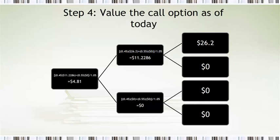Now when we bring it back one more time, one more year, we again weighted by the probability of up, probability of down, and we discounted by 1.05, or 5%. So we have a value of the call option of 4.81. So that's the value of the call option today. So this was the backwardization move from the 26.2 down to 4.81.